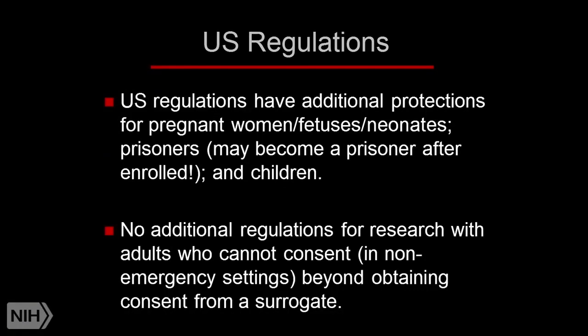Here's a case in a context in which informed consent isn't going to get us the protections we want, simply because this subject can't understand what she needs to understand to give informed consent. As for U.S. regulations: Subpart A covers general protections for research, largely focusing on informed consent and IRB review. Then there are subparts for extra protections for vulnerable subjects — B, C, and D — applying to pregnant women, fetuses, and neonates; prisoners; and children.